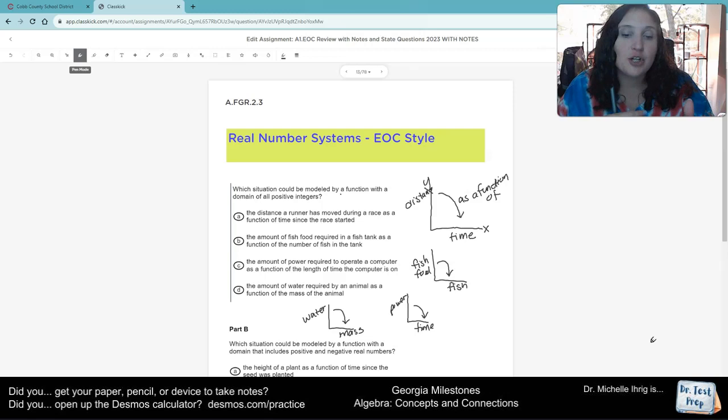So now that we know how to interpret what it's talking about, then what we need to do is what do they mean by all positive integers? From the other slide, we talked about natural numbers being 1, 2, 3, 4, 5, whole numbers being 0, 1, 2, 3, 4. Integers being positive and negative whole numbers. So integers do not have decimals. So given that integers do not have decimals or fractions, we have to see which one of these makes sense.